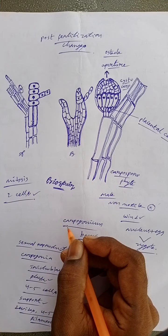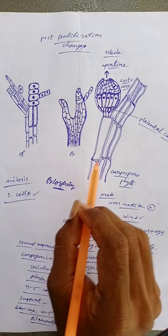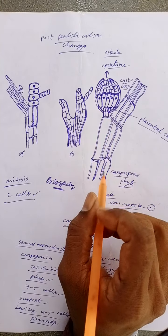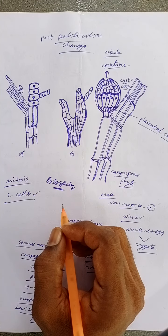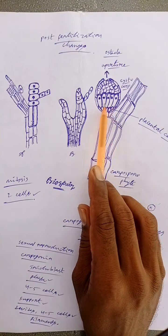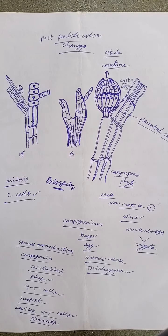The diploid nucleus of auxiliary cell divides mitotically into several nuclei. From the upper side of the placental cell several protuberances develop into which diploid nuclei migrate.